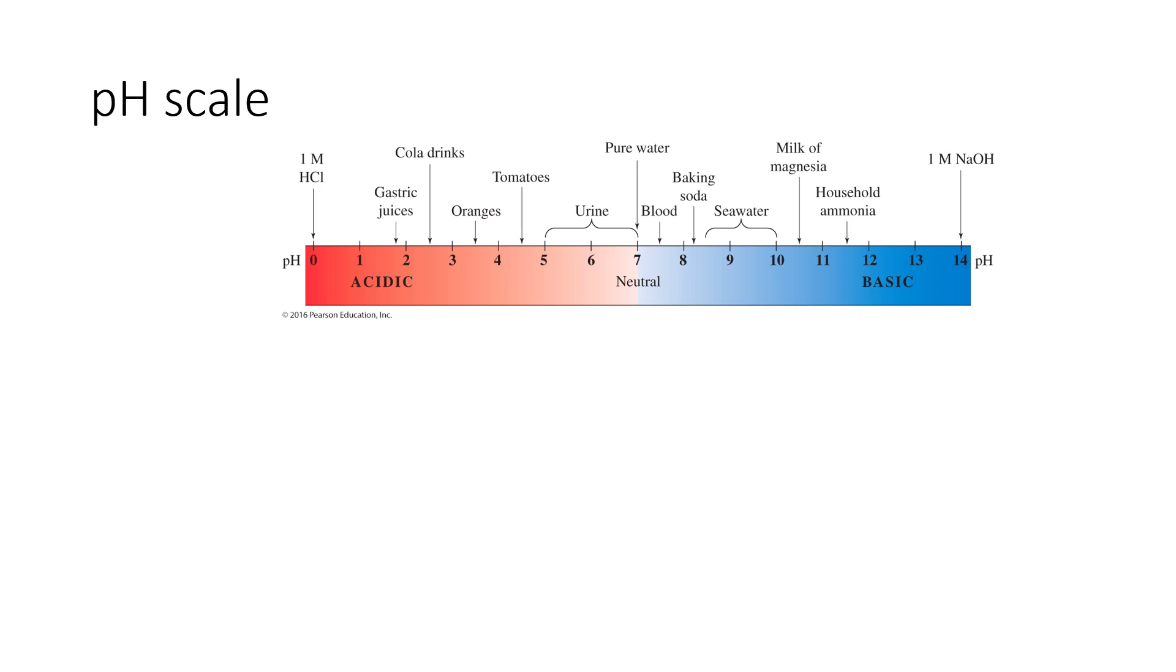The pH scale is how we describe how acidic or how basic a solution is. I want to start talking about the scale right in the middle at a pH of 7, which is what we call a neutral solution. A neutral solution is neither an acid nor a base and has a pH of 7.